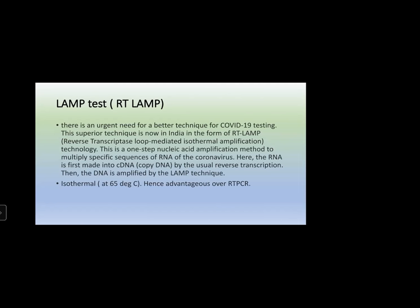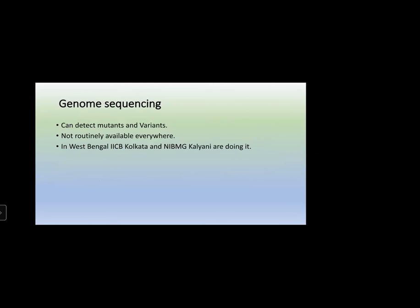The RT-LAMP test — loop-mediated isothermal amplification with reverse transcriptase — is a superior technique now available in India. A reverse transcriptase converts RNA into cDNA, and then the DNA is amplified isothermally by the LAMP technique at 65 degrees Celsius. The advantage over RT-PCR is that RT-PCR requires moving through different temperatures — 95, 54, and 72 degrees for denaturation, annealing, and extension. LAMP occurs at one temperature only, so you do not have to worry about temperature monitoring. Genome sequencing can detect mutants and variants but is not routinely available everywhere.